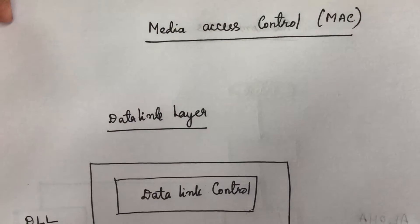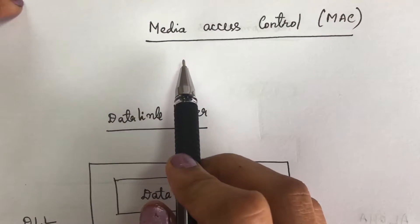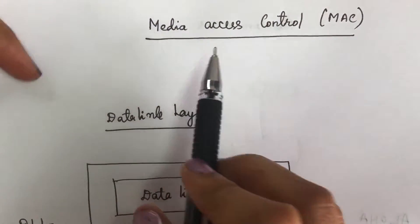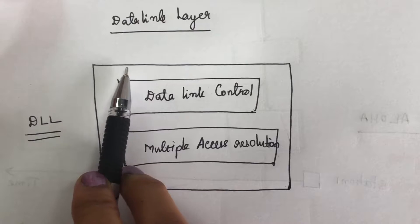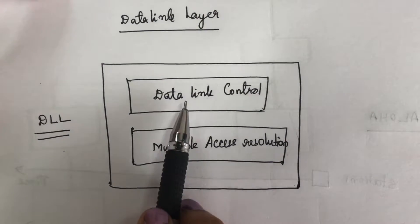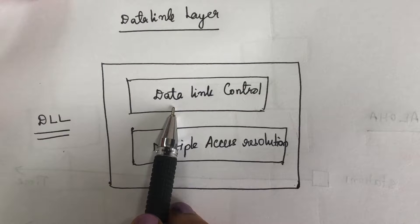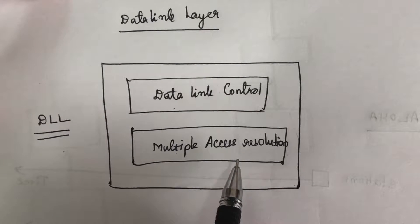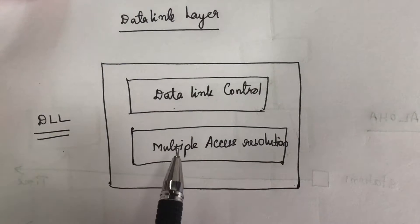Hello everyone. Today we are going to see a new topic called media access control. Before going into media access control, we need to know the two sub-layers we have in the data link layer. We have two sub-layers: one is the data link control layer, and the other one is the multiple access resolution or multiple access layer.